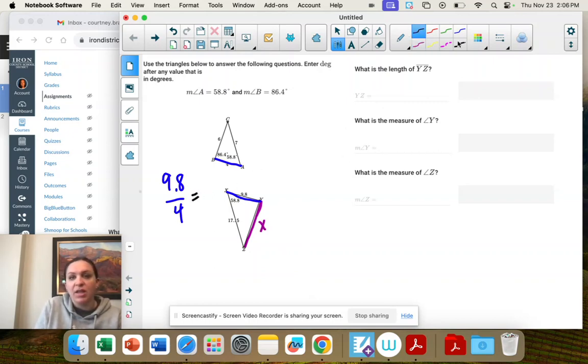And so we need to figure out what side that aligns with. And I'm going to follow the angle. So see how 58.8 goes this way. We don't want that side. We want the one across from it.